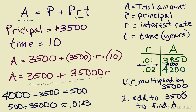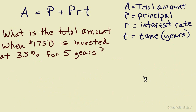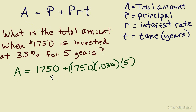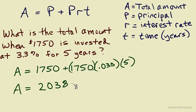Let's practice a couple more examples. First: what's the total amount when $1,750 is invested at 3.3% for five years? We're trying to find total amount A, and the formula is solved for A, so we substitute our values and use order of operations. Using the decimal form of 3.3% which is 0.033, we calculate that A equals $2,038.75.